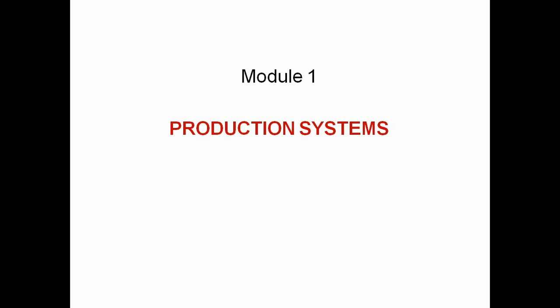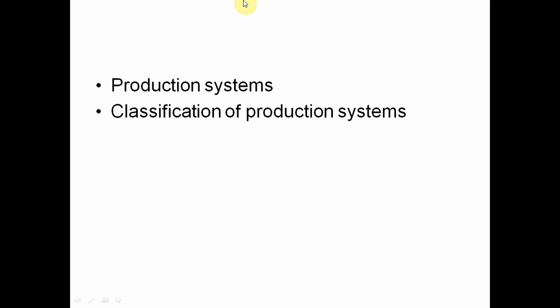The most important role of the organization is to gather the needs of the customer from the market. In parallel, demand has to be manufactured with respect to the needs of the customer. We will look at what a production system is, and after that the classification of production systems. The output of the production system is the creation of goods or services which satisfies the needs of the customers.